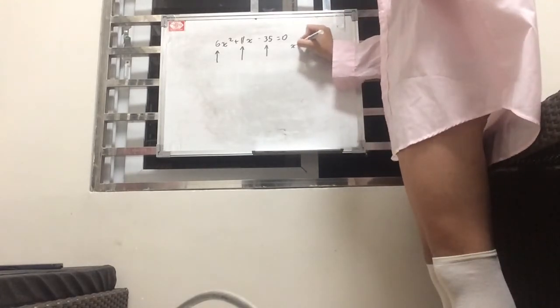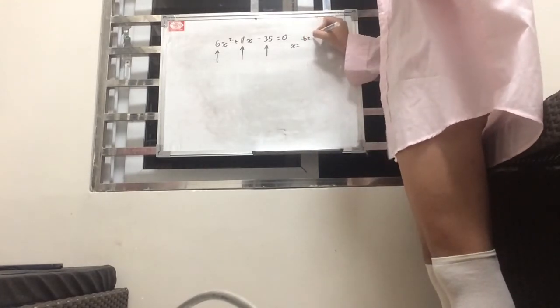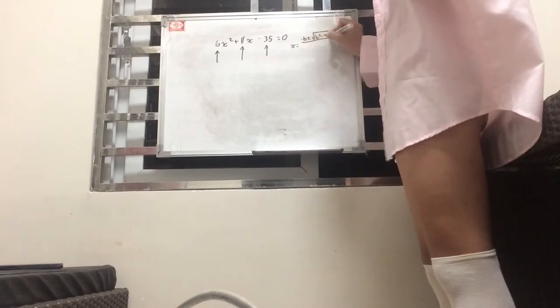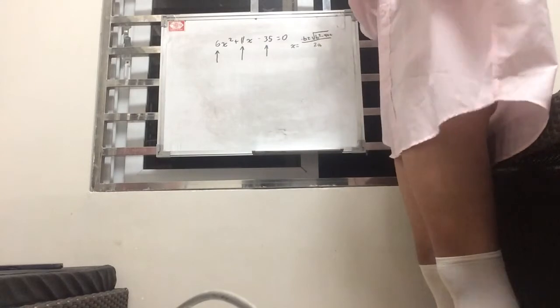How would we solve that? Well, we use the quadratic formula in which we identify a. In this equation, a is 6, b is 11, and c is 35.